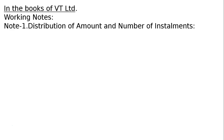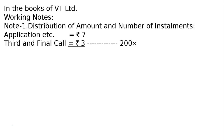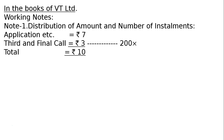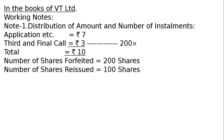In the books of VT Ltd. Working Note 1: Distribution of amount and number of instalments — application etc. ₹7, third and final call ₹3. 200 shares held by Mr. Mohan failed to pay the final call. Share value is ₹10, number of shares forfeited: 200, number of shares reissued to Narendra: 100.